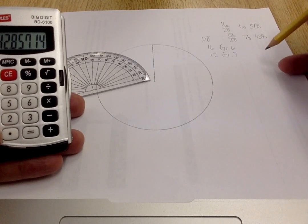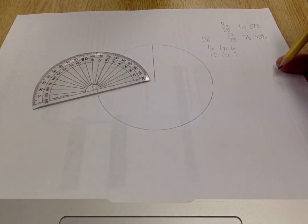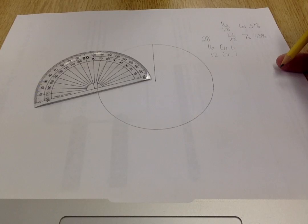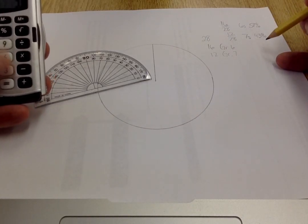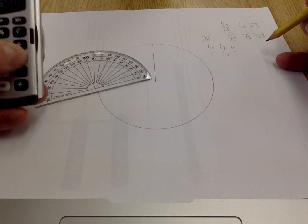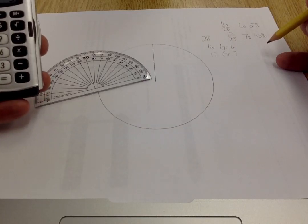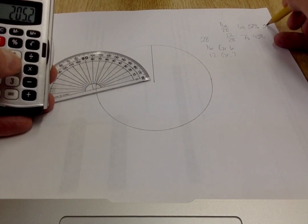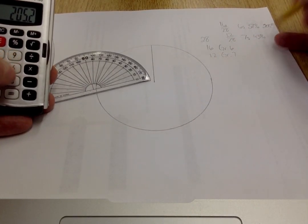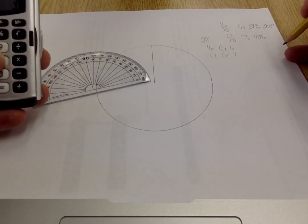I then need to take my information and convert it so I can use the degrees on my protractor. So I'm going to do 360 times 57%, which is 205 degrees.